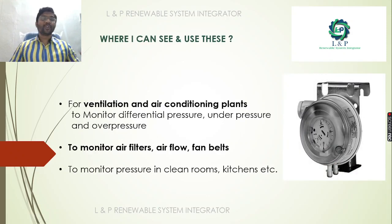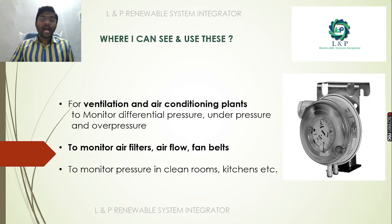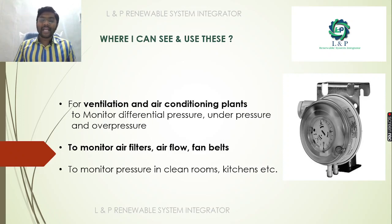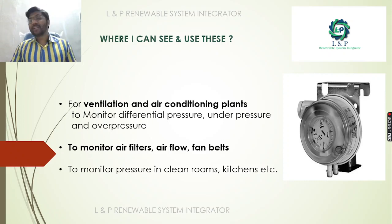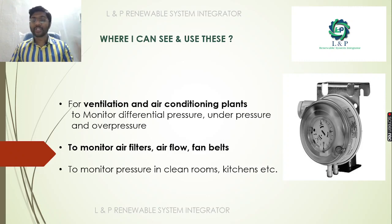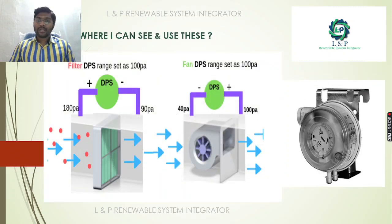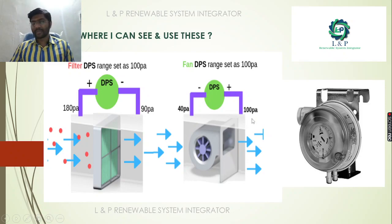This differential pressure switch is mostly used in heating, ventilation, and air conditioning systems. Most importantly, it is used to monitor filters — air filters. It is also used to monitor fan airflow and fan belts. Even in kitchens and clean rooms, we can use it to monitor pressure. It can be installed across filters and fans.